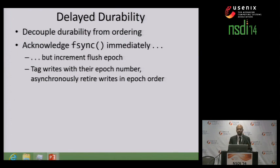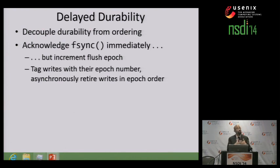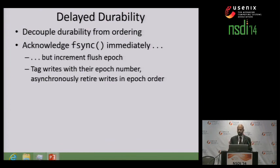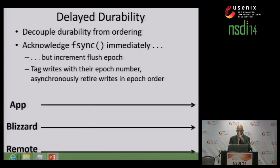Blizzard is going to use delayed durability semantics to remove those write barriers. The basic observation is that the traditional fsync operation combines both durability and ordering. However, to provide consistency, a flush merely needs to tag writes with their flush epoch. Later, the disk can asynchronously retire those writes in epoch order.